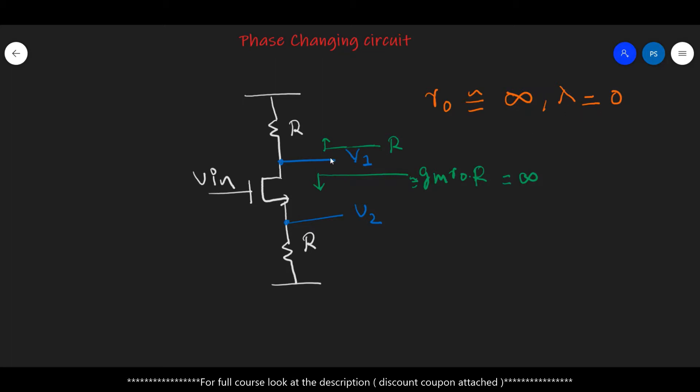So under this condition, if I look what is the resistance looking downward into the drain of this MOSFET, we know that it is approximately the intrinsic gain of the MOSFET, which is gmro, into the source resistance which is R. Now, because ro is infinite, we can treat this resistance looking downward as infinite. And the resistance looking upward is simply this resistance R.